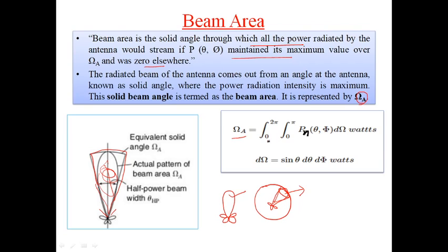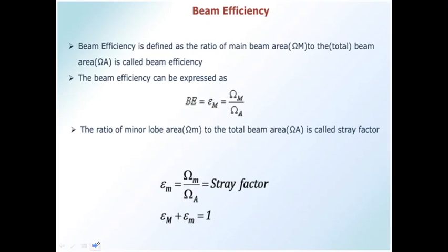For the calculation of beam area, we consider the entire spherical area — integrating from 0 to 2π as well as 0 to π — of P_n(θ, φ) dΩ, where the unit of beam area is steradians (sr). P_n(θ, φ) is the normalized power, and by obtaining this normalized power we can automatically calculate the beam area. Knowing the beam area is very useful for analyzing the performance of an antenna.